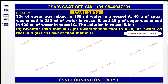In 2021 there is a question: 30 grams of sugar was mixed in 180 ml water in vessel A; 40 grams of sugar was mixed in 280 ml of water in vessel B; 20 grams of sugar was mixed in 100 ml of water in vessel C. The solution in vessel B — it is possible they give you the same question in 2024 also but they may change the options, so be careful.